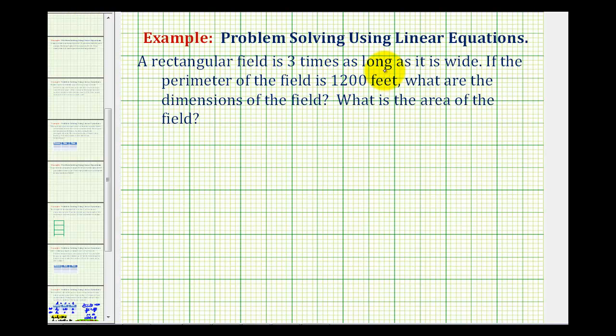A rectangular field is three times as long as it is wide. If the perimeter of the field is 1,200 feet, what are the dimensions of the field and what is the area of the field?